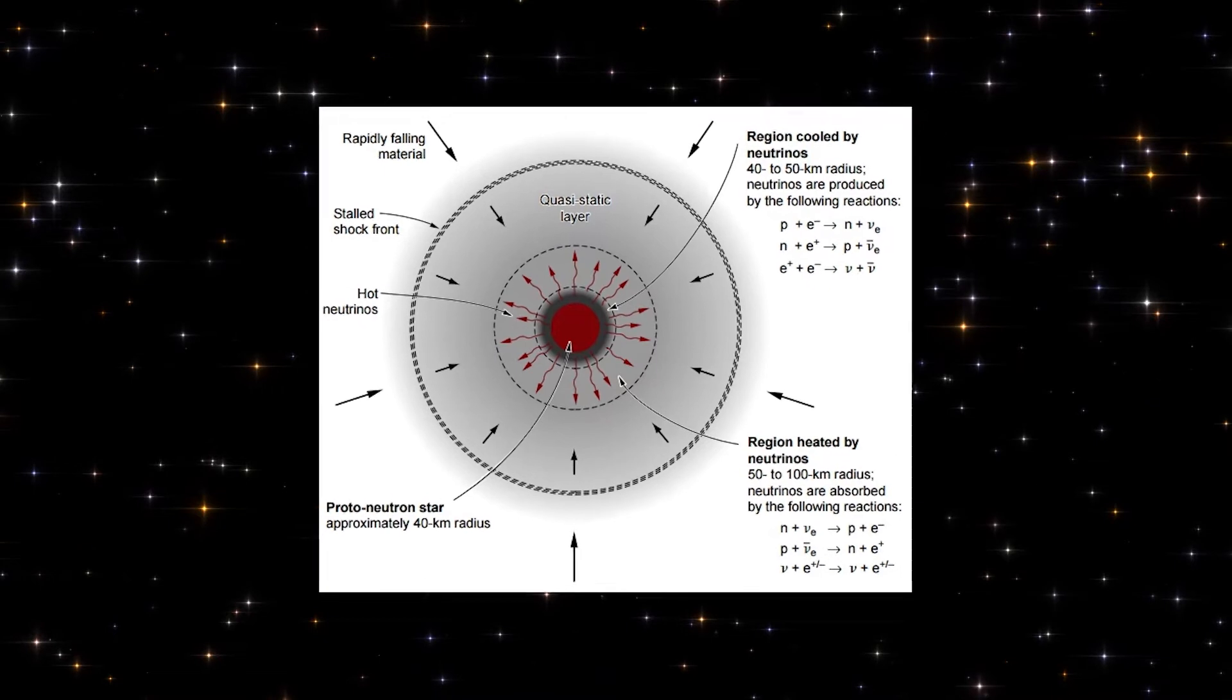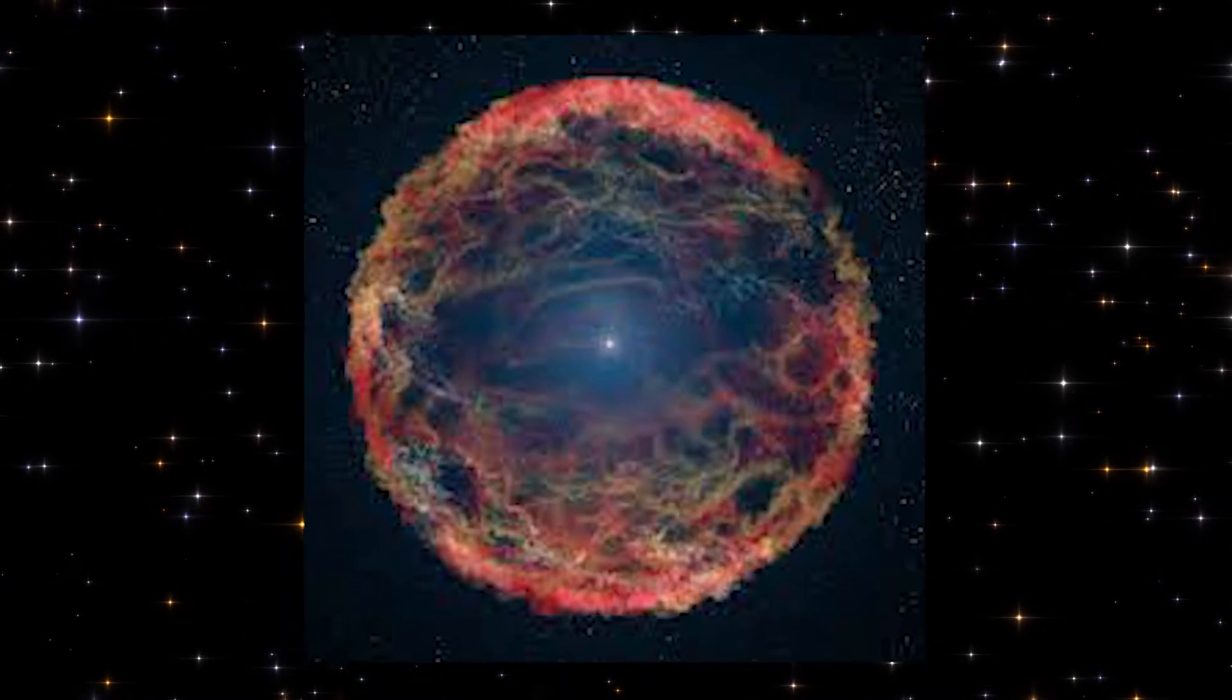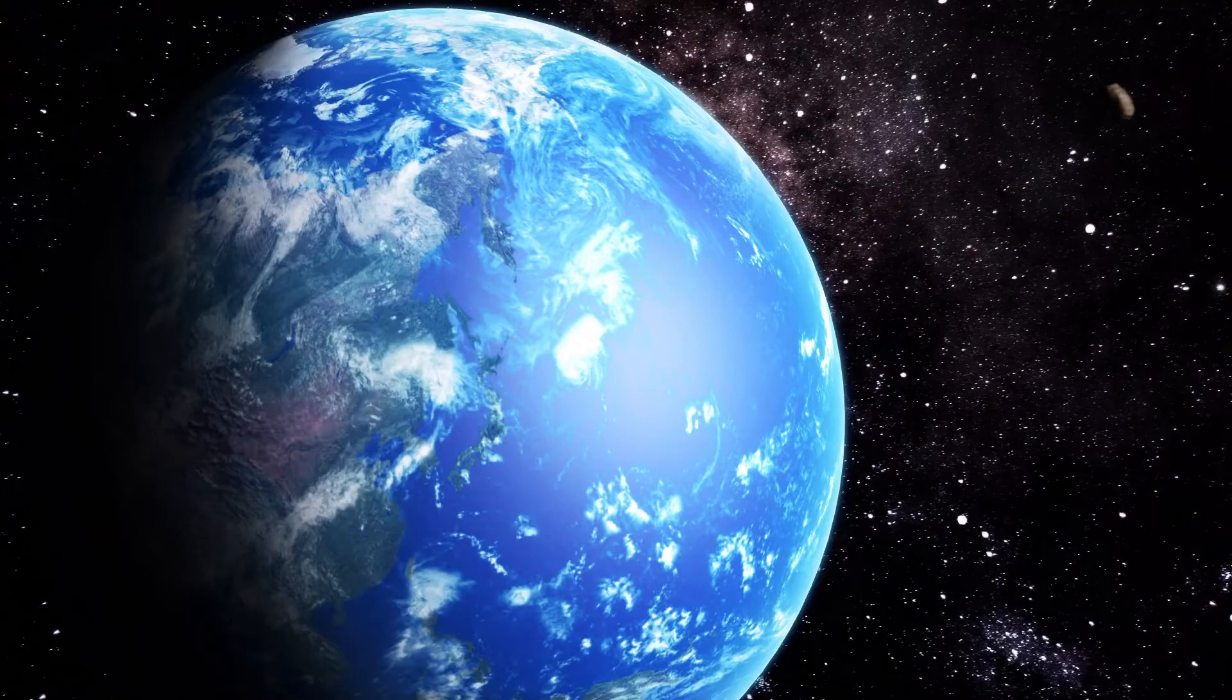If the hydrogen outer envelope is still present in the star, the core collapses, starting a fusion process in the hydrogen layer resulting in a supernova explosion. Very interesting, isn't it?